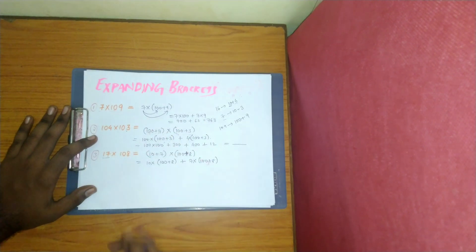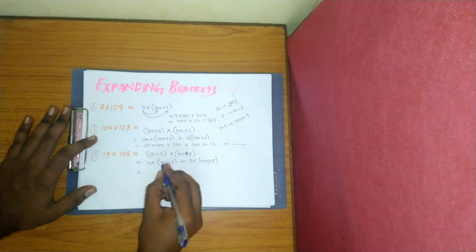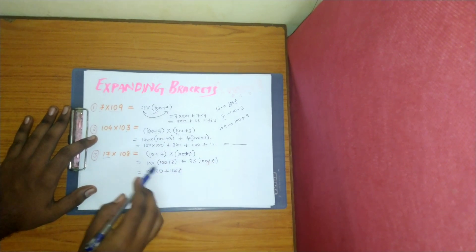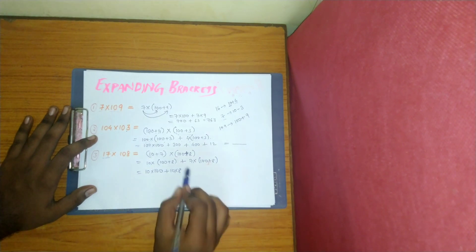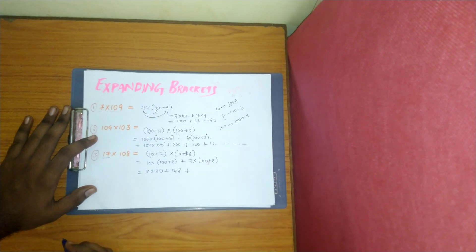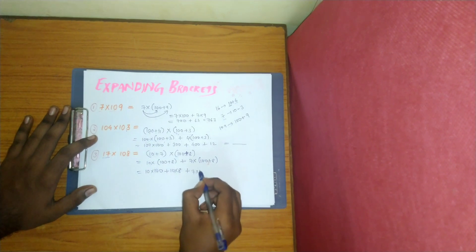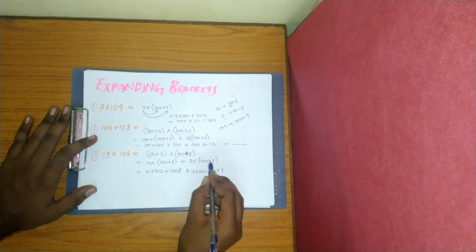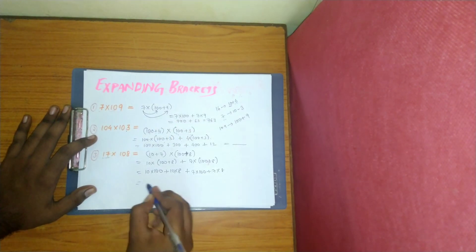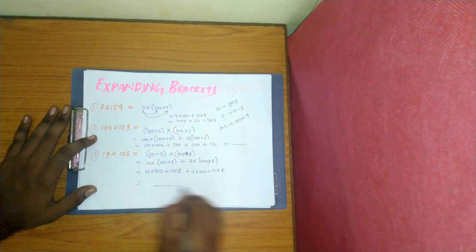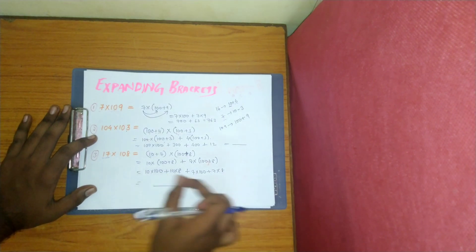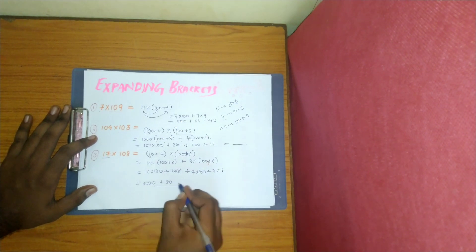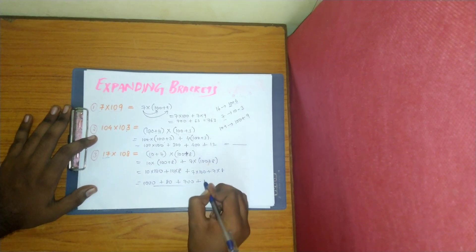Plus, because there is a plus, 7 into the whole number 100 plus 8. So: 10 into 100 plus 10 into 8, then again plus 7 into 100 plus 7 into 8. Same procedure. So you calculate: 1000 plus 80 plus 700 plus 56. Add these numbers and tell me the answer.